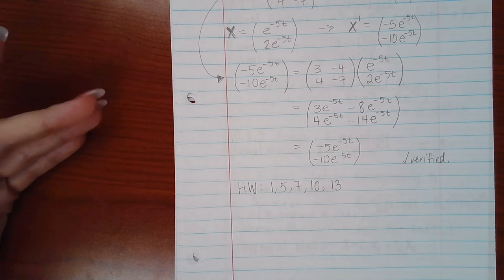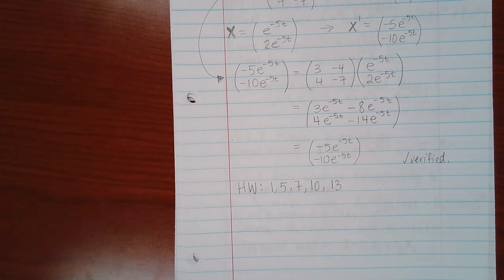So the homework set for 10.1 is just going to be numbers 1, 5, 7, 10, and 13. And all you're doing is putting it from one form to the other and vice versa, or verifying whether a given solution is, in fact, a solution.